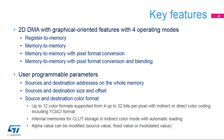The Chrom-ART Accelerator has four operating modes: register-to-memory for rectangle filling operations, memory-to-memory for 2D memory copy operations, memory-to-memory with pixel format conversion for bitmap drawing with format conversion, and memory-to-memory with pixel format conversion and blending for bitmap or text drawing with transparency.